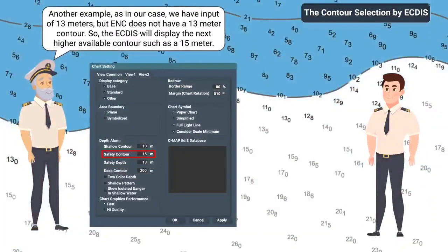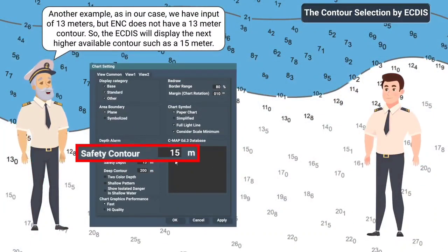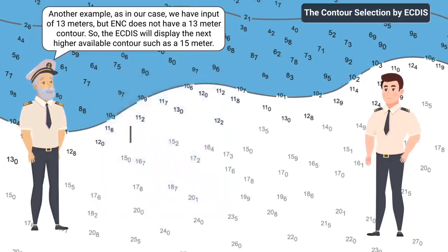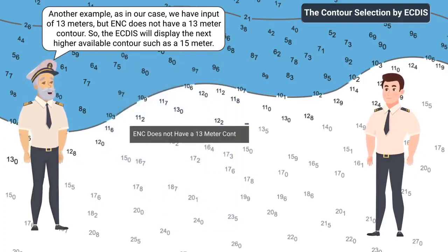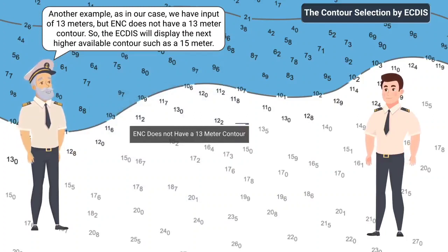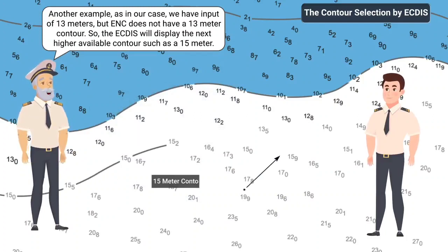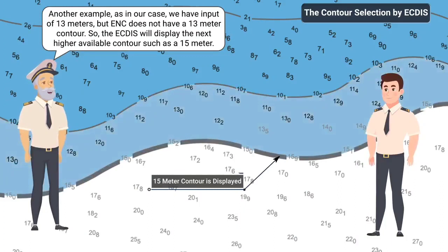Another example: as in our case, we have an input of 13 meters, but the ENC does not have a 13-meter contour, so the ECDIS will display the next higher available contour, such as a 15-meter contour.